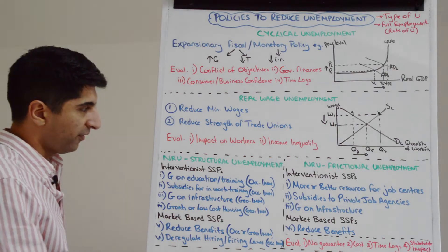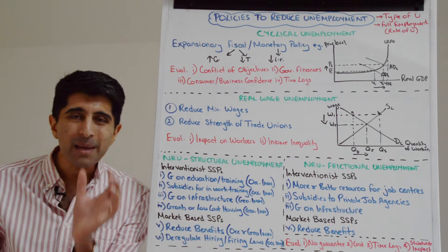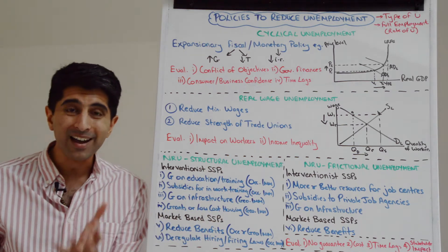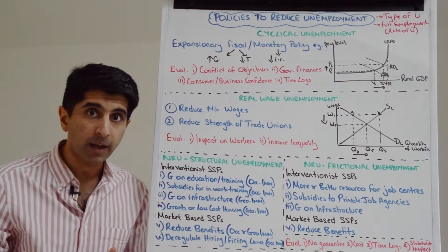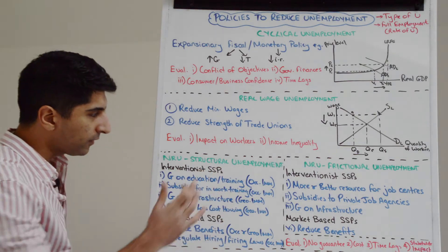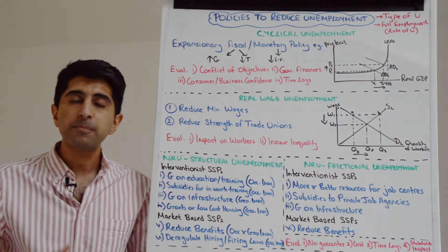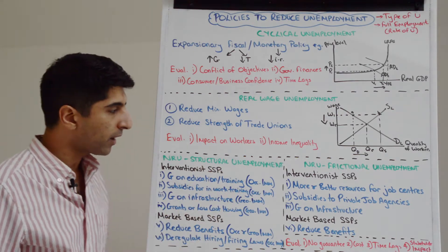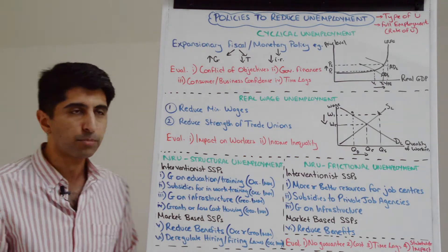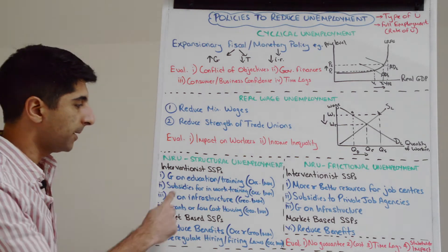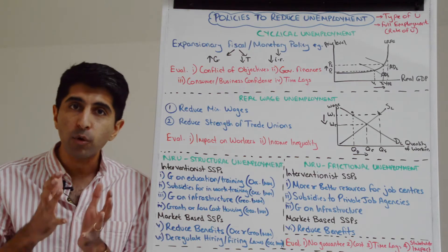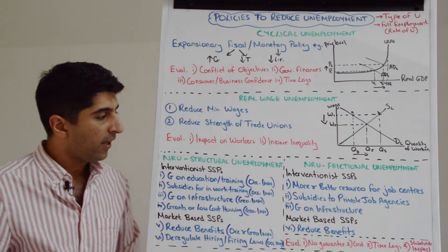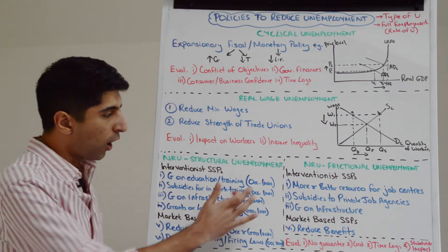Let's focus on structural unemployment first. Remember that structural unemployment is about immobility of labor — the occupational immobility of labor and the geographical immobility of labor. So we need supply-side policies that target reductions in those immobilities. Looking at interventionist supply-side policies first: we could increase government spending on education and training — curriculum reform, building new schools, hiring or training more teachers, spending on adult training programs — to boost the skills of the workforce and improve productivity, thus bringing down occupational immobility of labor. The government could also offer subsidies to private firms to encourage more in-work training programs, giving workers transferable skills so they can easily transfer into vacancies if made unemployed.